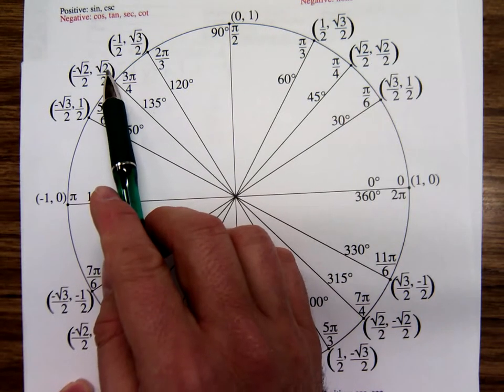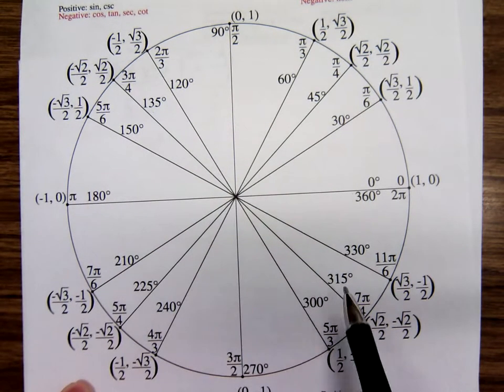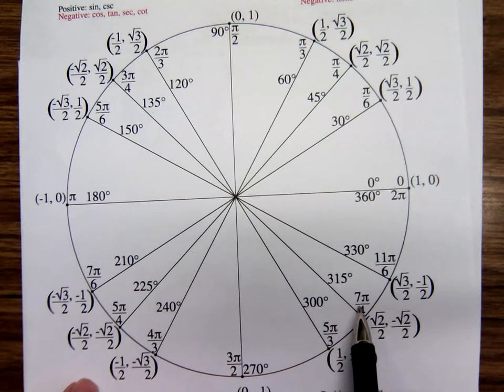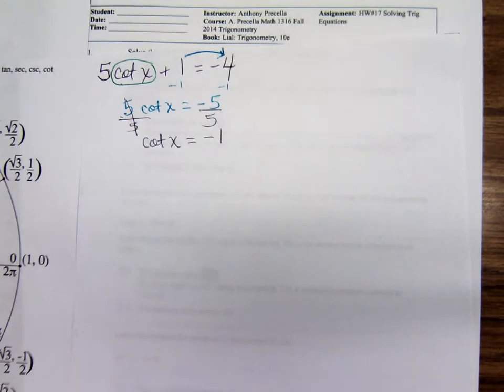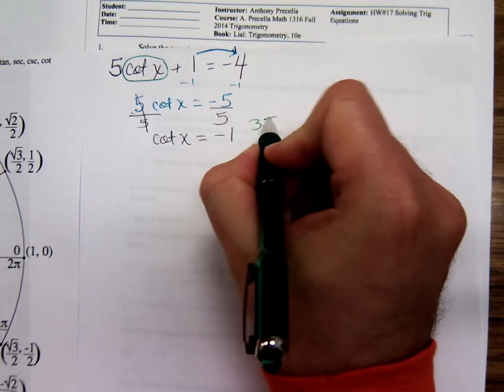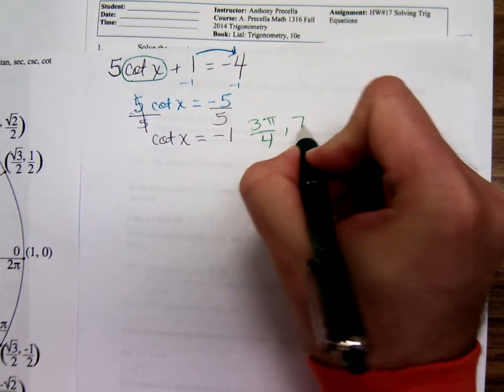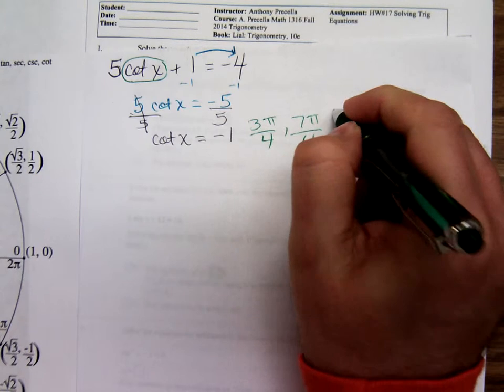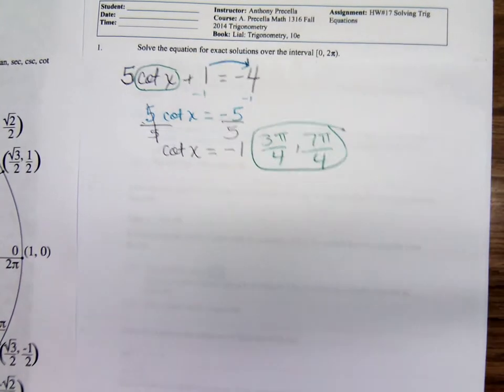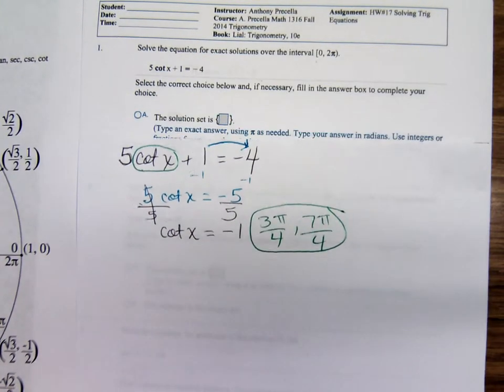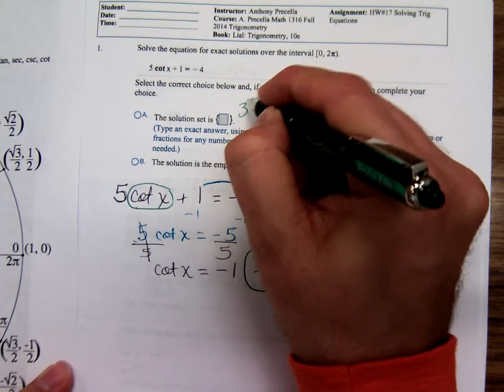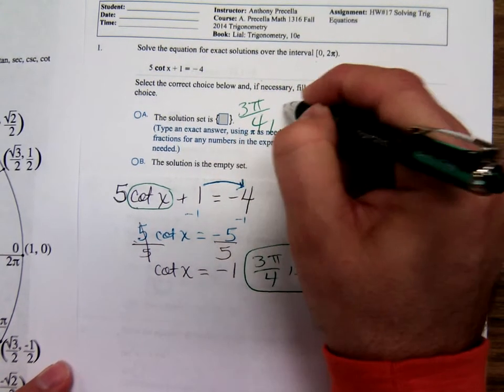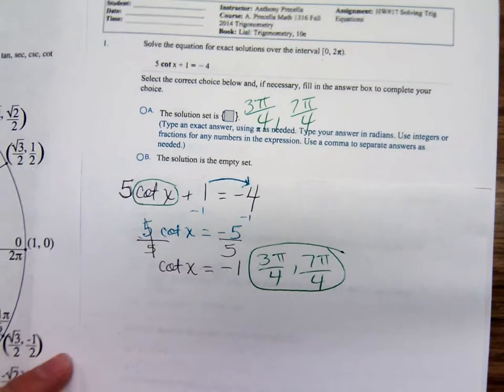Cotangent is cosine over sine, x-coordinate over y-coordinate, first number over second. At 3π over 4, 135 degrees, you get negative 1, and the same thing here at 7π over 4. So the answers are 3π over 4 and 7π over 4.